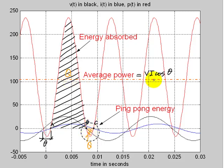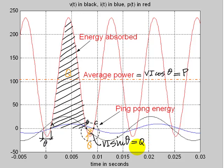We call the average power the active power P. The energy traveling back and forth — the ping pong power — is accounted for as reactive power Q. The reactive power is VI times the sine of the power factor angle (alpha minus beta). We measure Q in vars, kilovars, or megavars (kilo volt-ampere reactives). Active power P, reactive power Q.